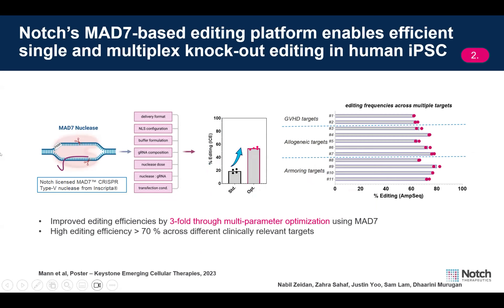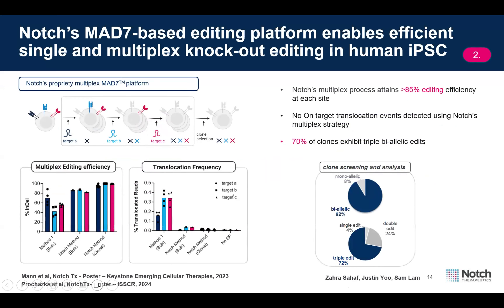Notch's iPSC gene editing platform uses MAD7 nuclease, a class 2 type 5 nuclease. When we started developing this platform, it was not well known and had very poor editing efficiency. Extensive multi-parameter optimizations were conducted to increase editing efficiency in iPSCs, and today we routinely achieve above 70% editing across multiple clinical targets with MAD7. We also developed a multiplex editing approach where we can edit multiple targets simultaneously while retaining the editing efficiency of each individual target.